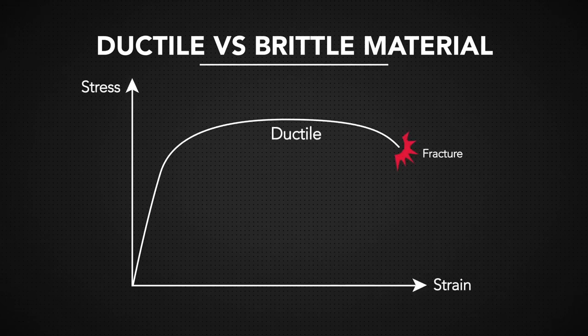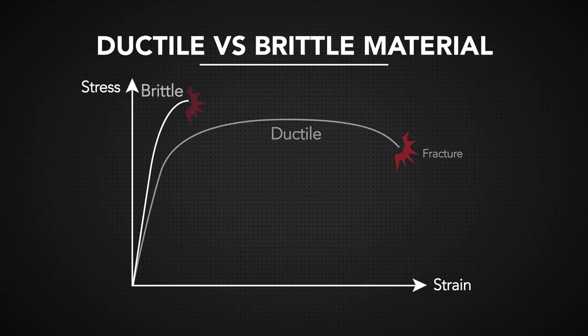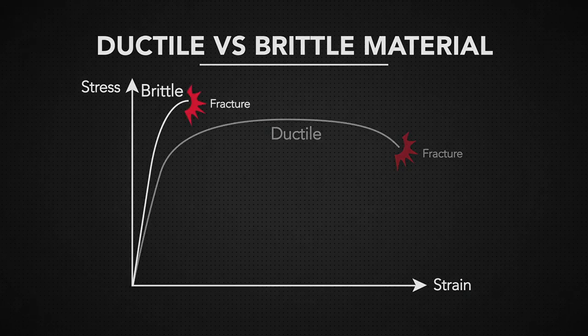Once a ductile metal has undergone elastic deformation, it may remain in the plastic deformation stage while outside forces act on it. A brittle material will break soon after it has ended its elastic stage.